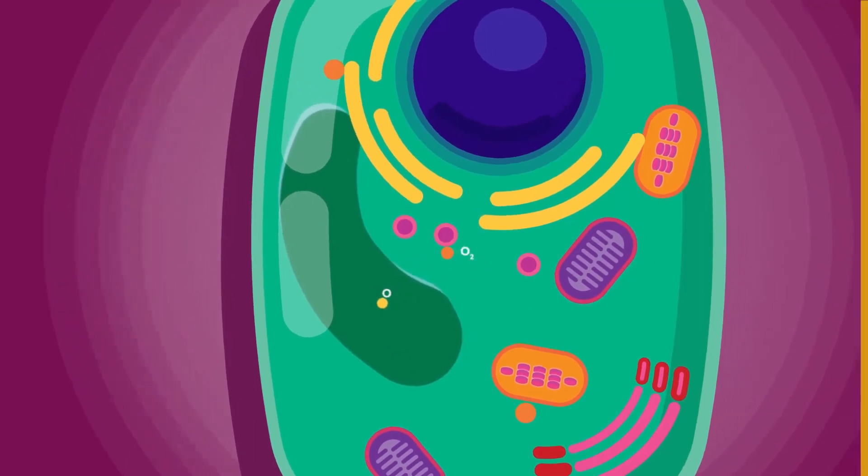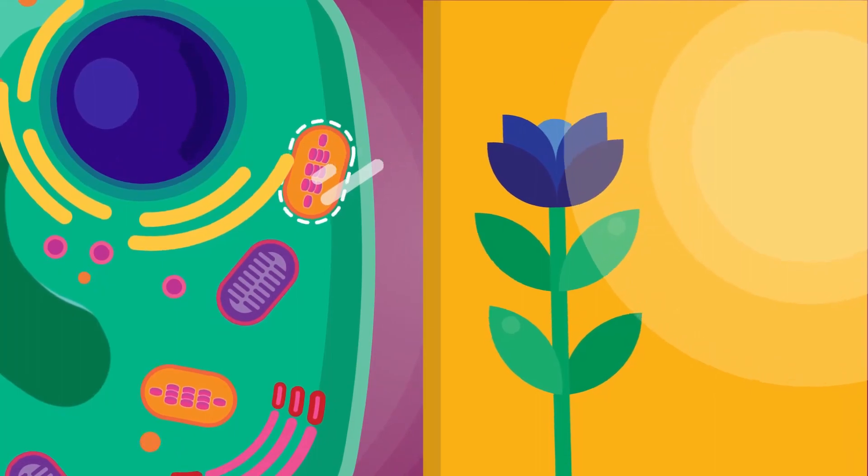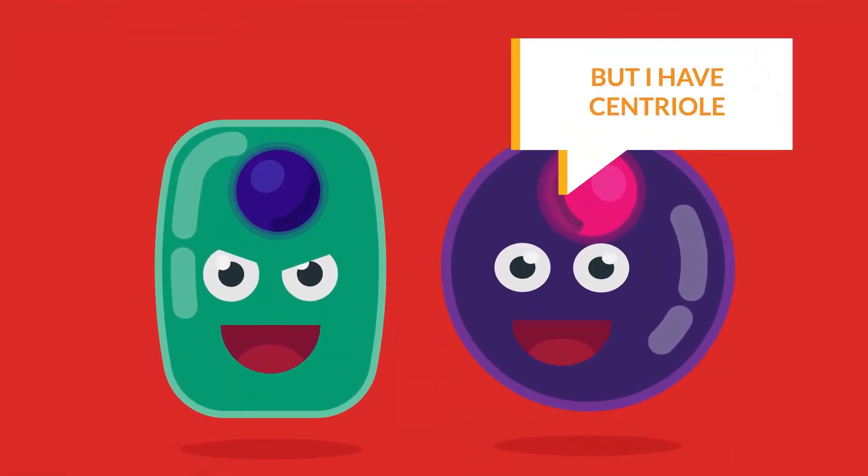Most plant cells also bear chloroplasts that help them carry out the process of photosynthesis. Animal cells do not have this.